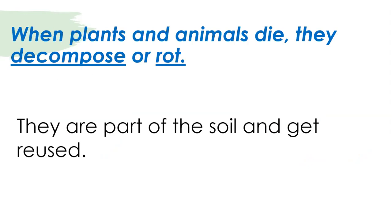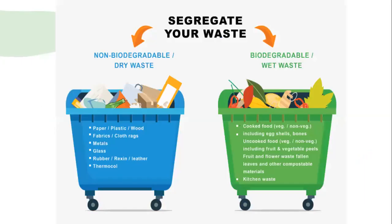When plants and animals die, they decompose or rot. They become part of the soil and get reused. There are two different types of waste: non-biodegradable or dry waste, and biodegradable or wet waste.